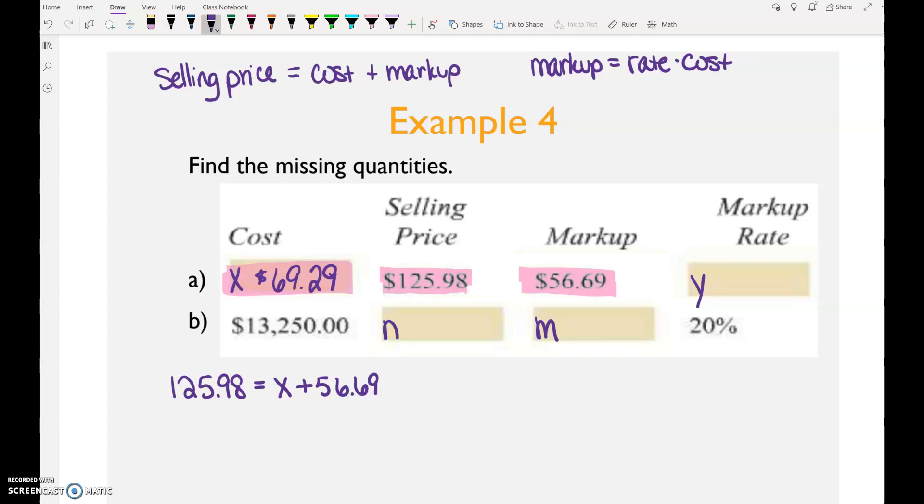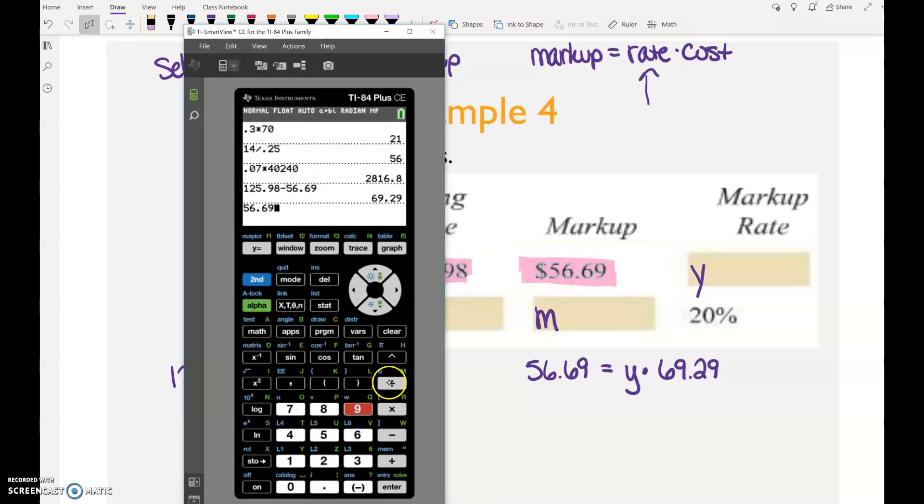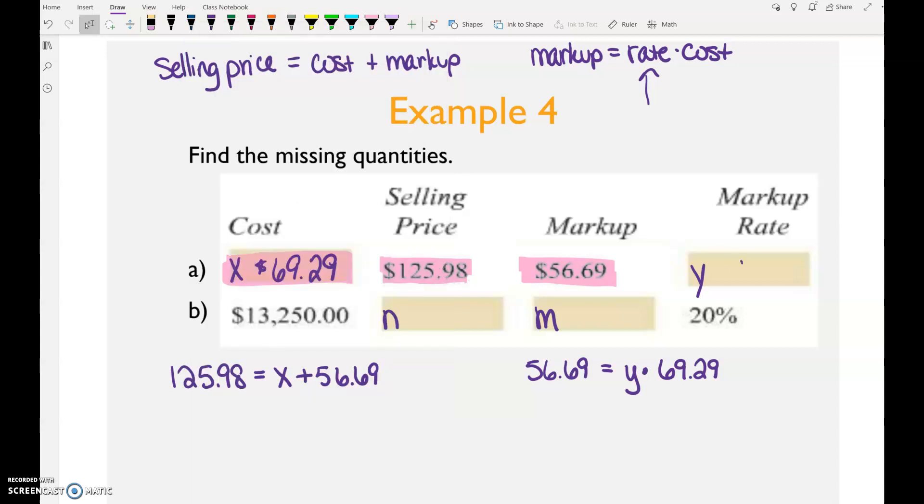Now the markup. Here's the equation with markup rate. So the markup, 56.69 equals the markup rate, which we don't know, times the cost, which we just figured out. This time it's a multiplication problem. So we solve it using division. 56.69 divided by 69.29. I get 0.818. What does 0.818 mean? Look at this other markup rate. The other markup rate is 20%. The markup rate needs to be a percent. 0.818 is 81.8% or 82%, depending on how you want to write that. I would accept either one. So this was 0.818. You just move the decimal point two places back and it's 81.8%.